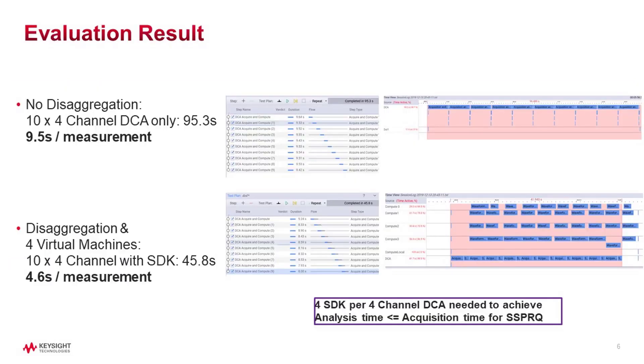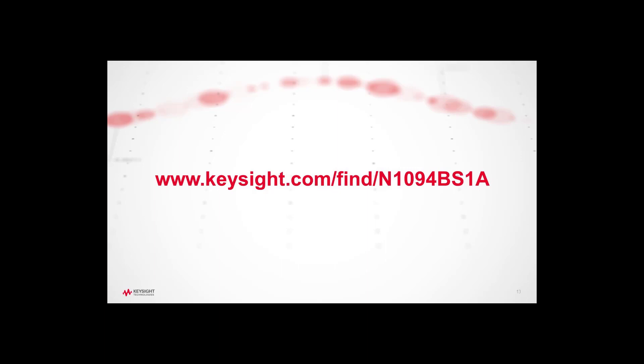Finally, comparing both experiments shows that through disaggregation and parallel waveform processing, the overall throughput was improved by a factor of 2 and measurement time reduced to 50% over the traditional approach. Asset utilization of DCA hardware is now increased to almost 100%. Visit www.keysight.com/find/n1094BS1A to learn more about the PAM4 measurement SDK for virtual machines.